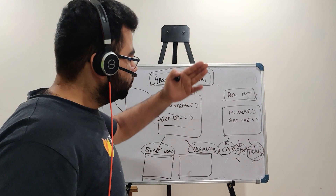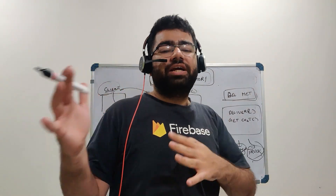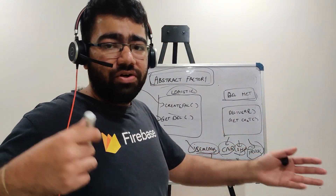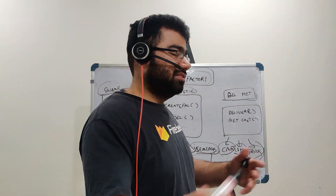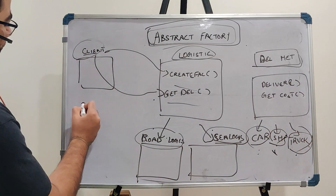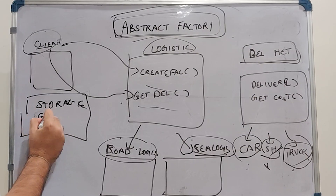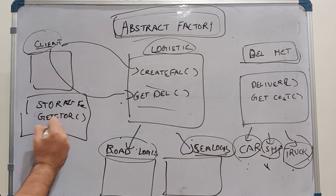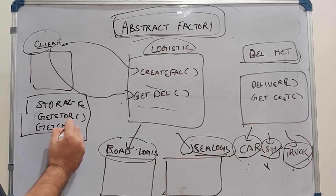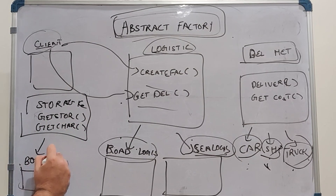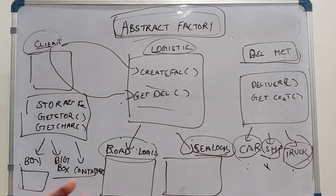The abstract factory allows you to create two related kinds of objects in the same factory rather than creating a different factory. So let's suppose we create a storage interface. It will have methods like get storage and get charges, and objects like box, big box, and container.